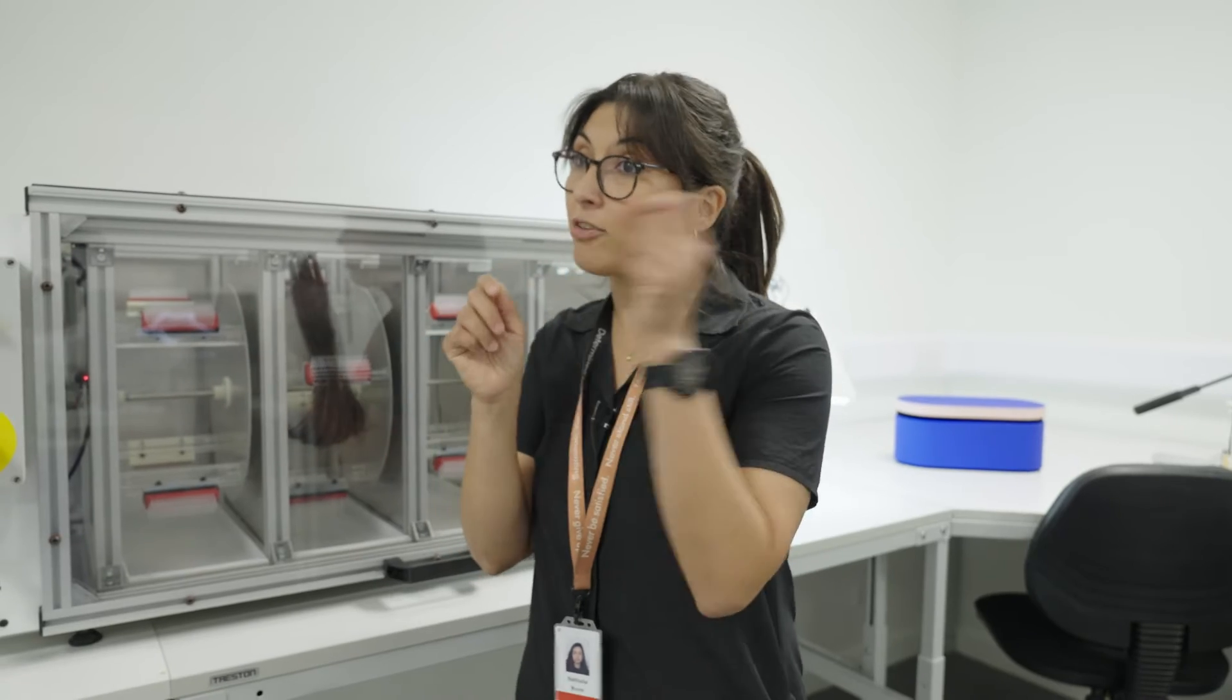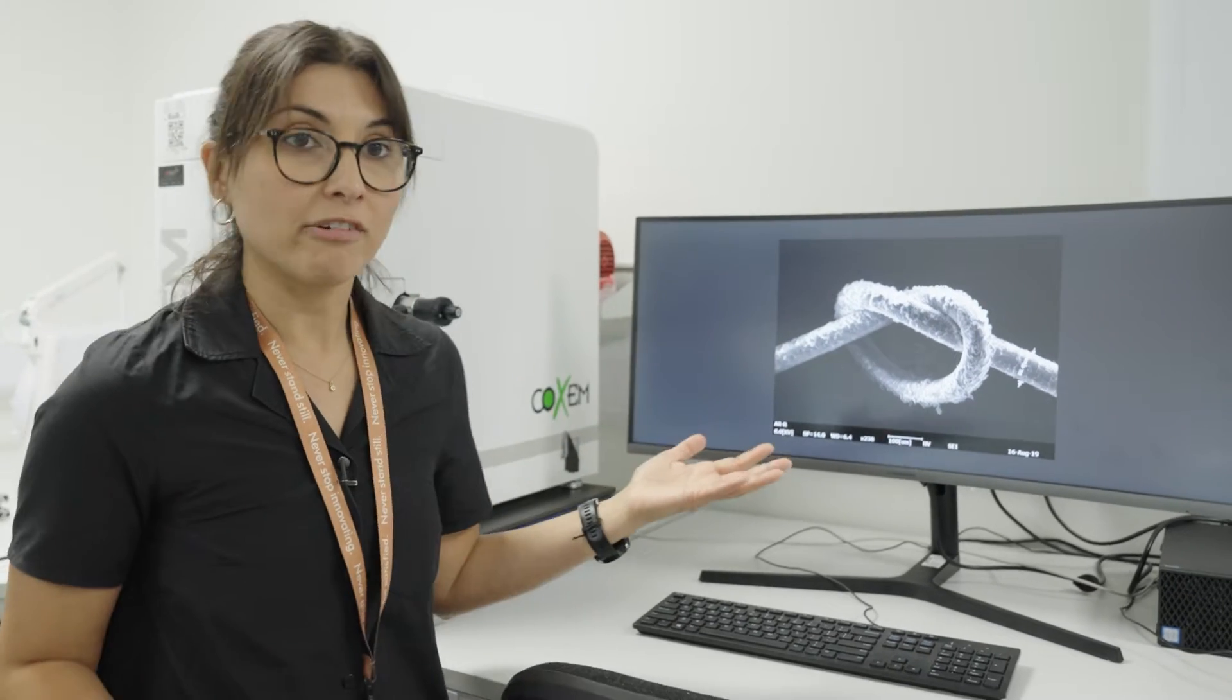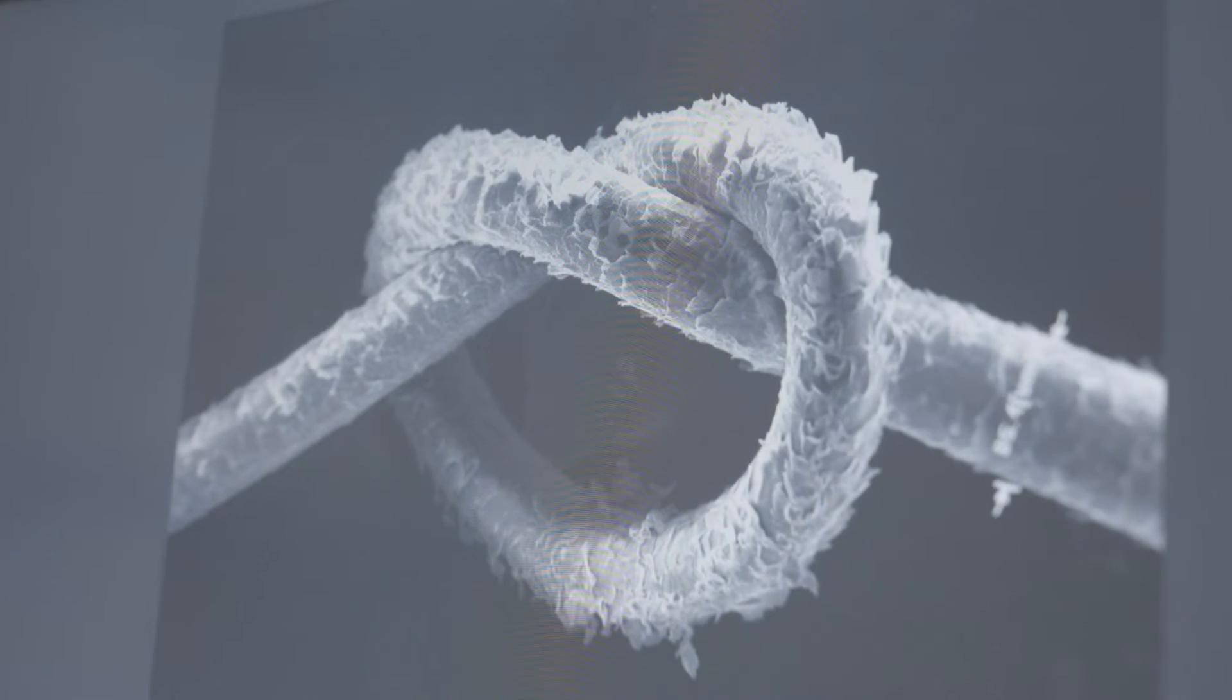After this, we will extract one single strand of hair, and then we'll take it to our scanning electron microscope, and what you can see is not looking great. So that gives us an indication that hair is damaged.